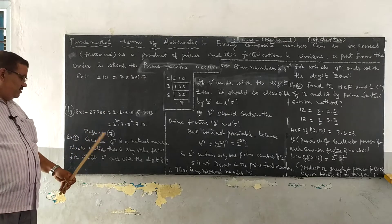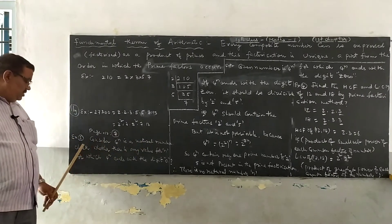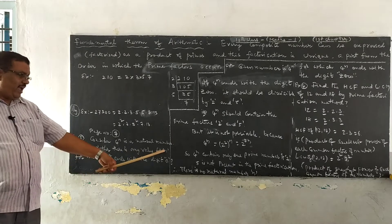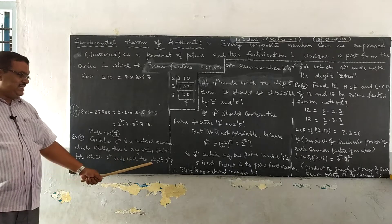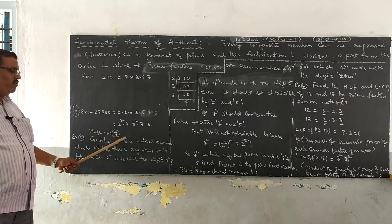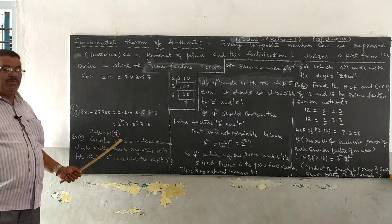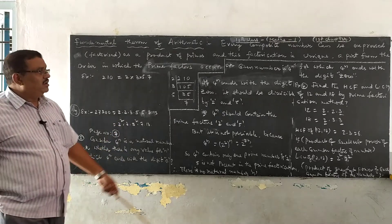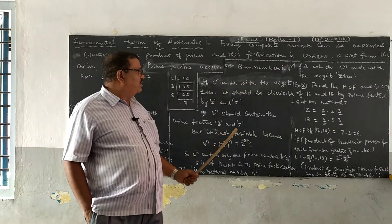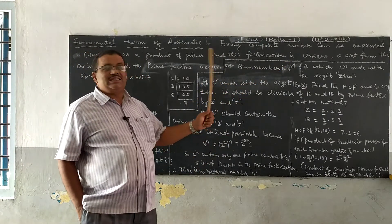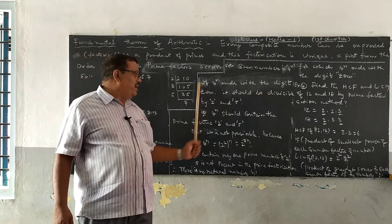Go through page number 7, example 3. Consider 4 power n as a natural number. Check whether there is any value for n for which 4 power n ends with the digit 0. How do we do this problem? We need to check whether it ends with the digit 0 for any natural number or not.